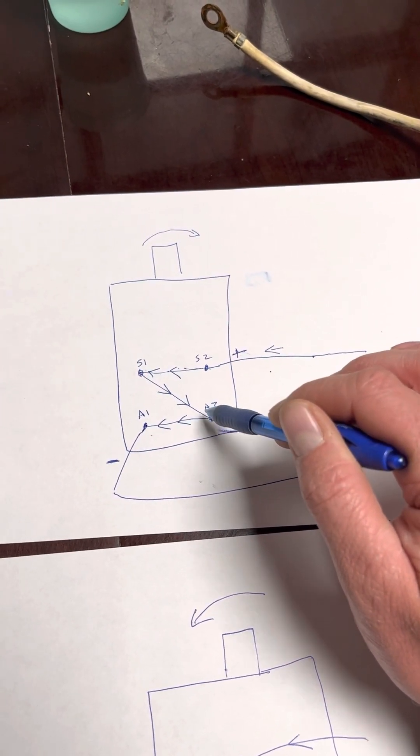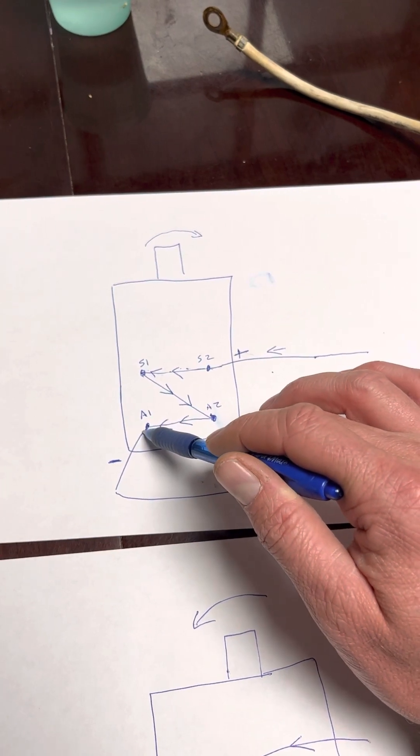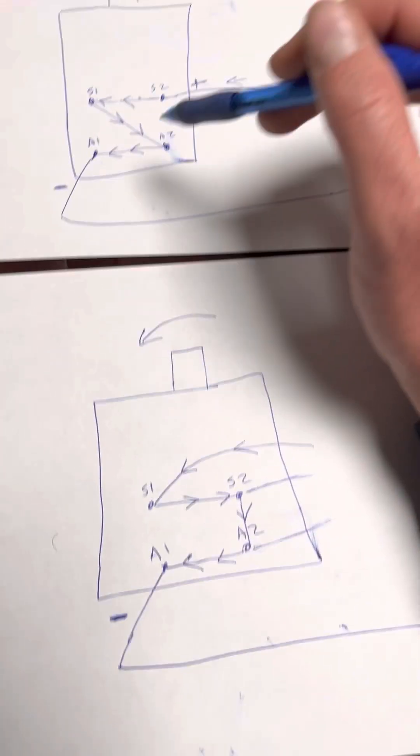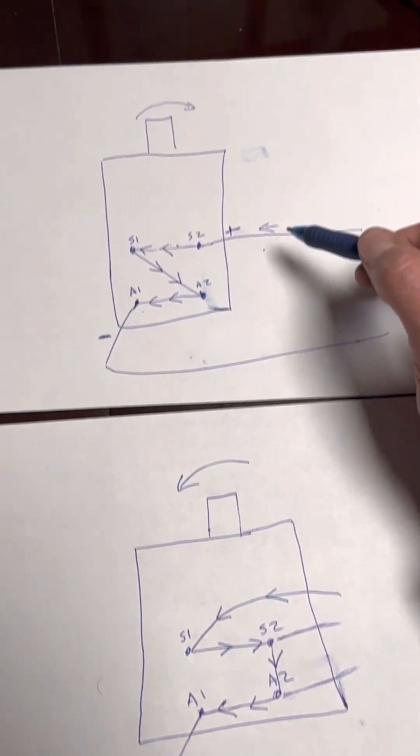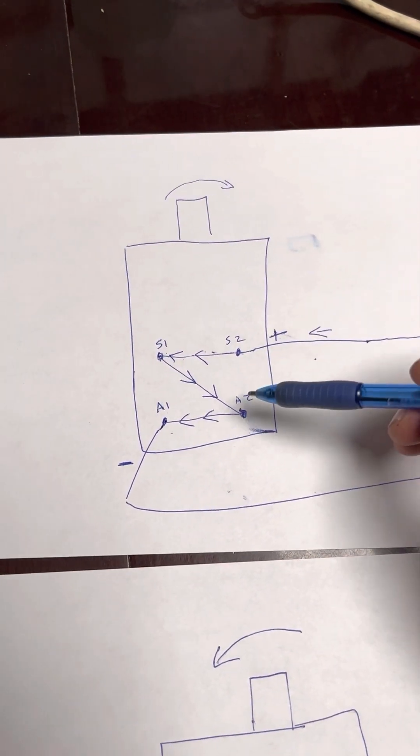And then it's going to go out of the armature. So if this is how you have it hooked up, there's two ways to hook it up. We're going to explain to you how that changes the direction of the armature spinning.